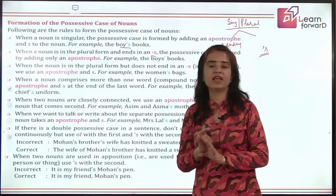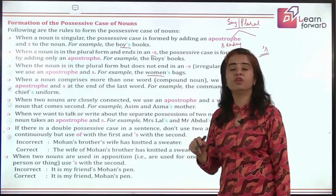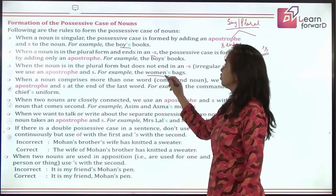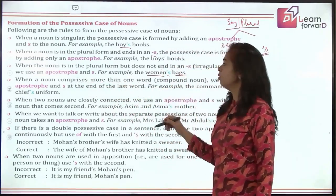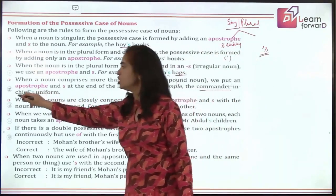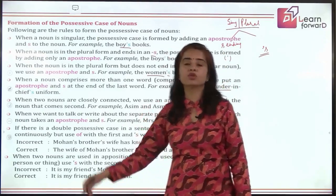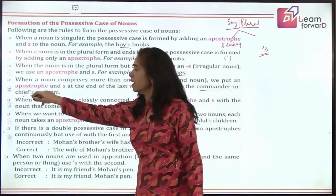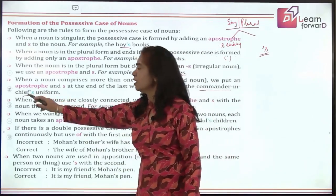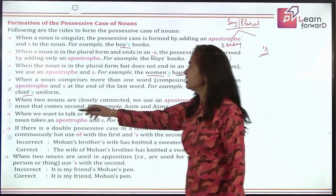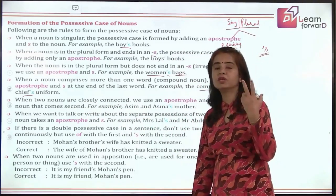'Children' is already plural but does not have 's' at the end — that is why we use apostrophe-s. 'Women' is another plural without 's' at the end, so we use apostrophe-s: 'women's bands'. When a noun comprises more than one word — for example, 'the commander in chief' — we add apostrophe-s only to the last word. So it becomes 'the commander in chief's uniform'.